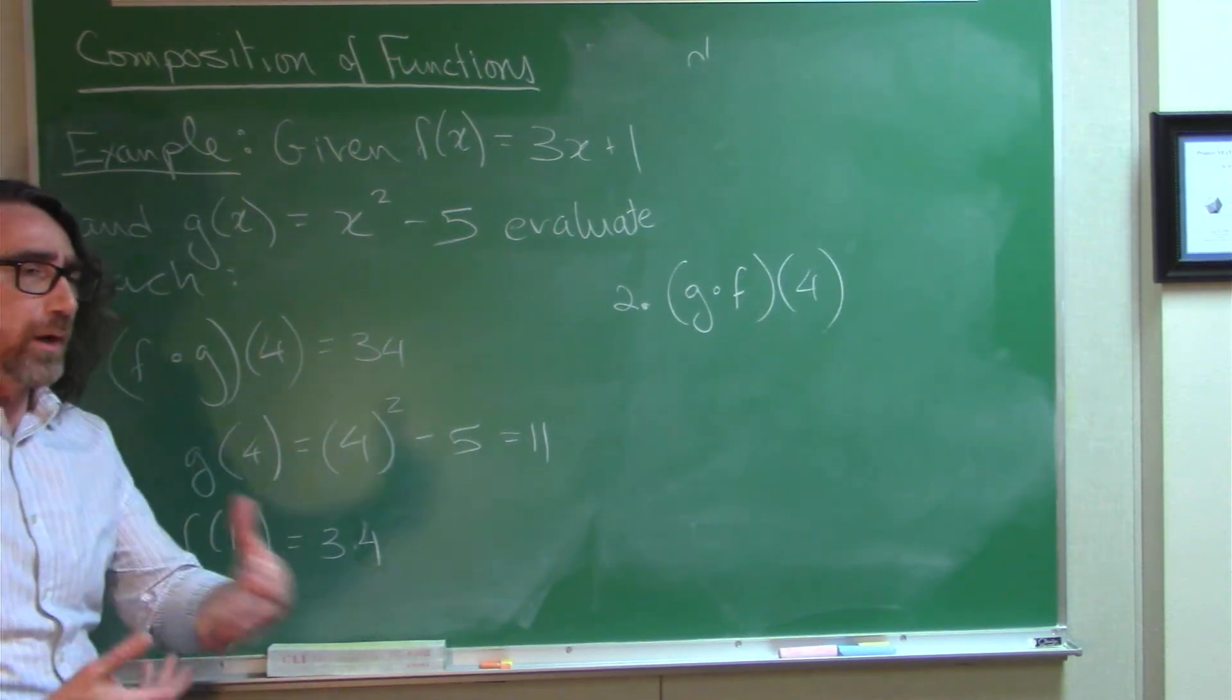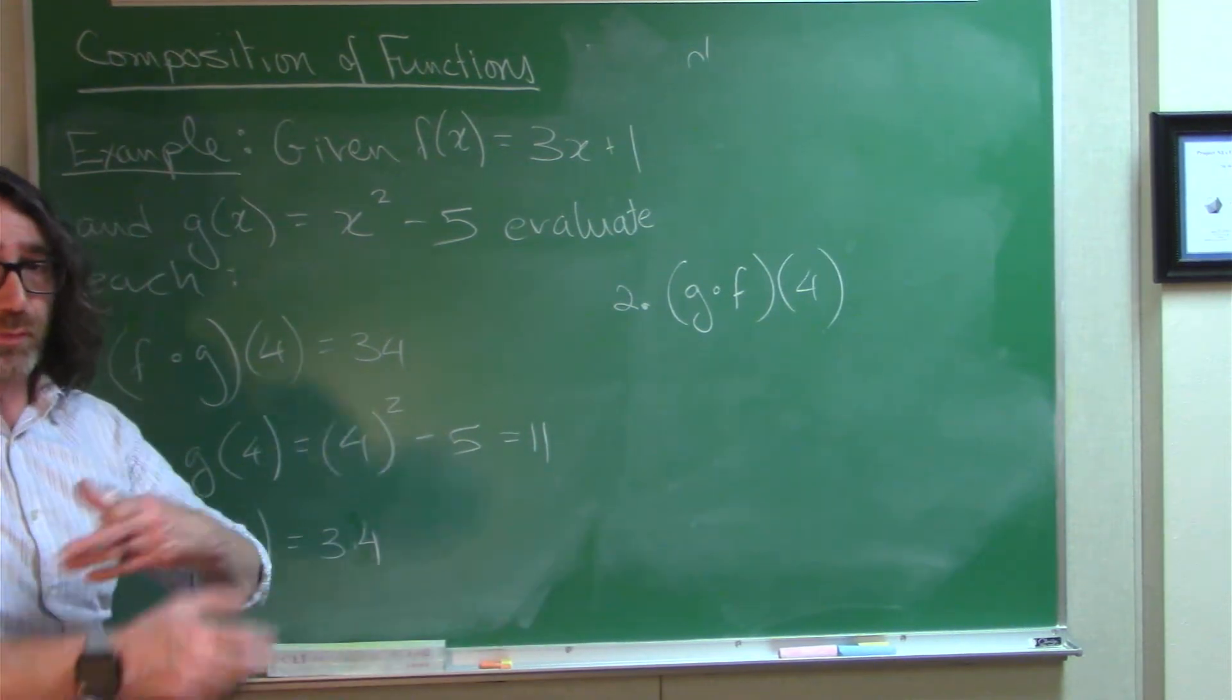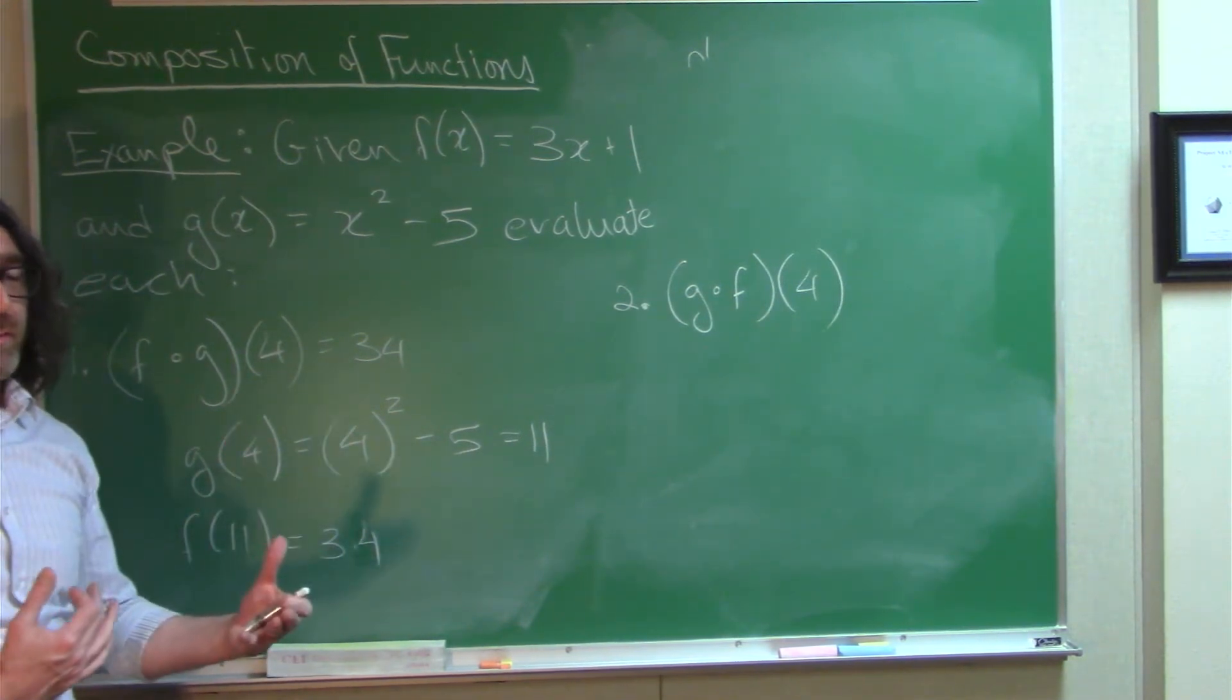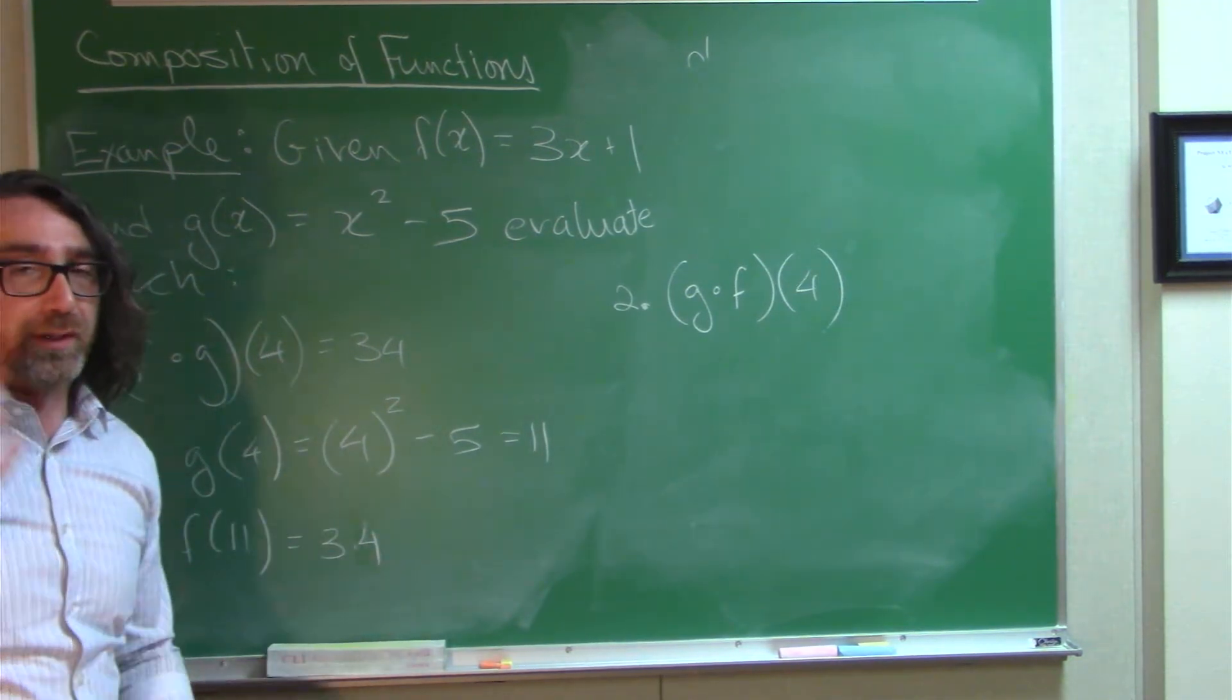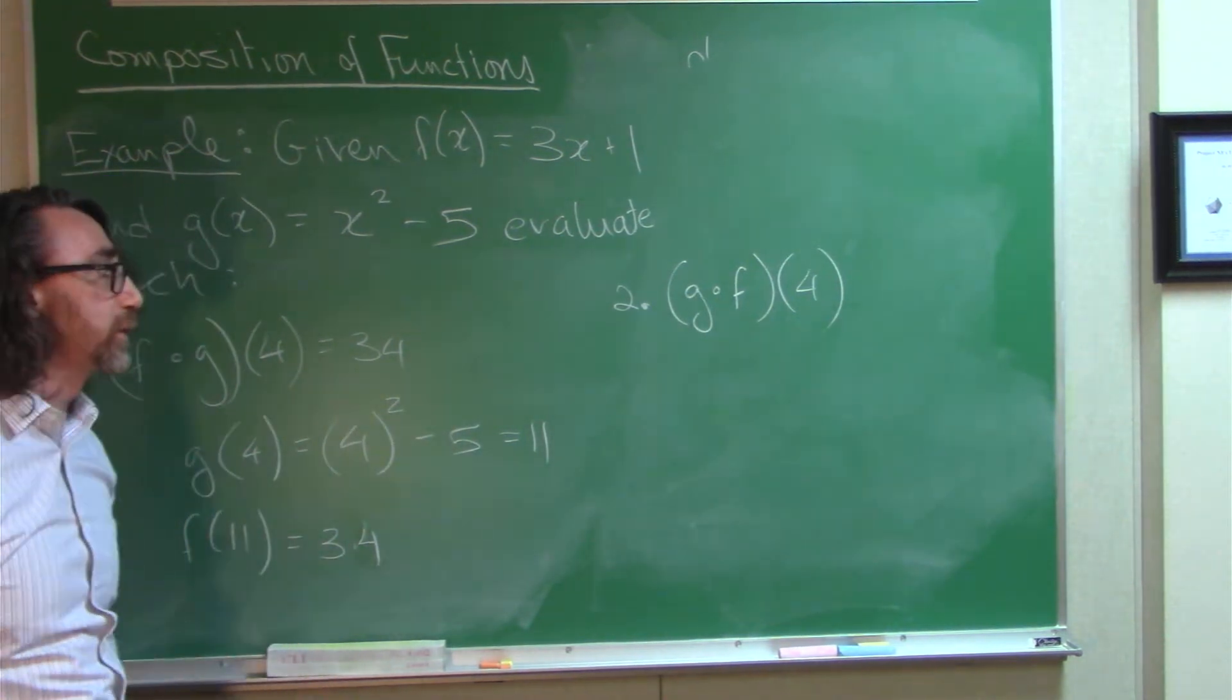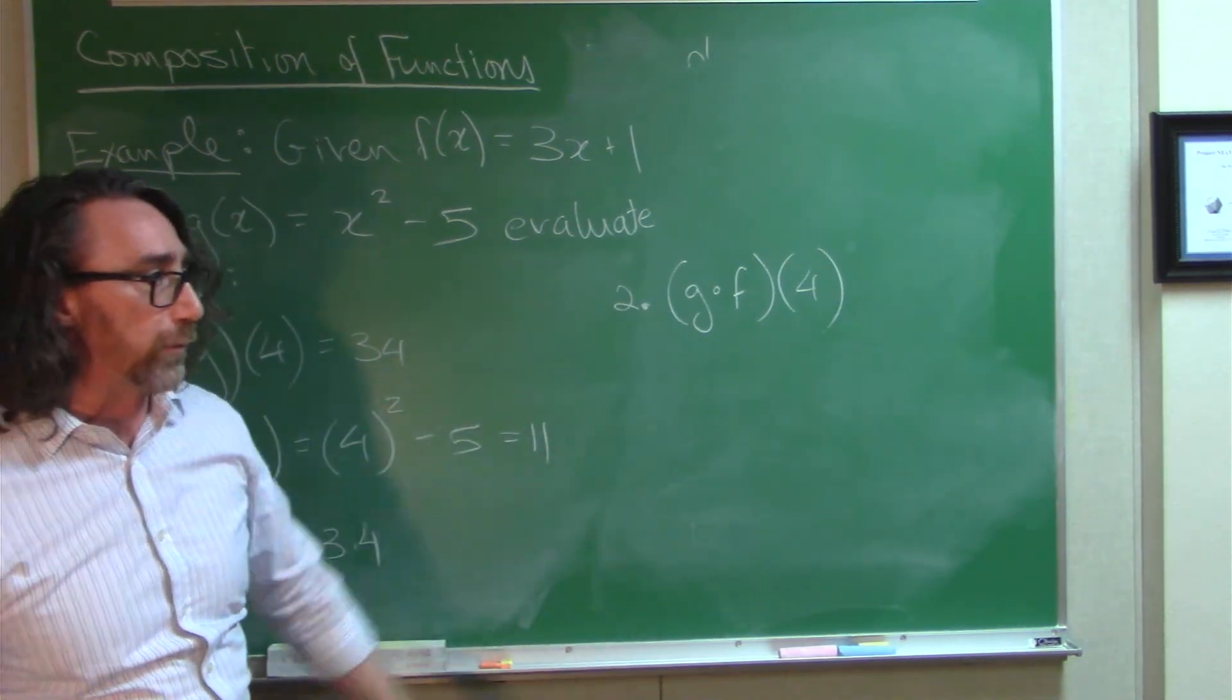When you add numbers, order doesn't matter, right? 3 plus 5 is the same as 5 plus 3. You can switch the order and get the same result. Most other operations, the order matters. So, it's so unusual that the order doesn't matter in addition, we give it a special name, we call it commutative. Addition satisfies the commutative property, because you can switch the order. Here, I bet we're going to get something different if we do the composition the other way around.